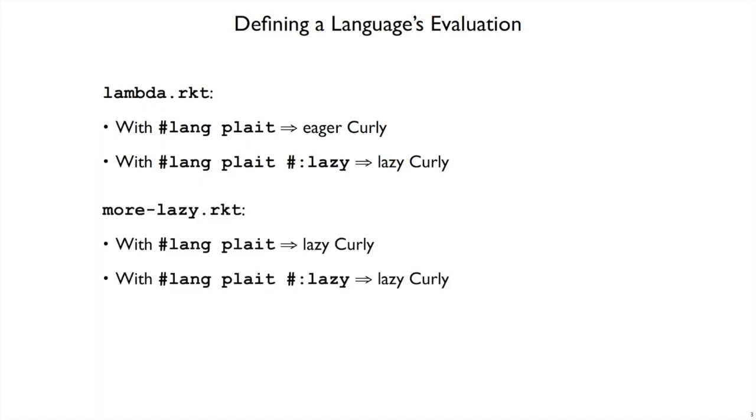Now we took more control in the case of laziness. Our more lazy interpreter will be a lazy curly no matter whether we run it in plate or lazy plate. What we want to do now is do the same kind of thing for eagerness. We want to make eager evaluation explicit so that our new eager interpreter will behave as an eager curly no matter whether we run it in eager or lazy plate. And that means we'll have understood and taken control over the eager evaluation.